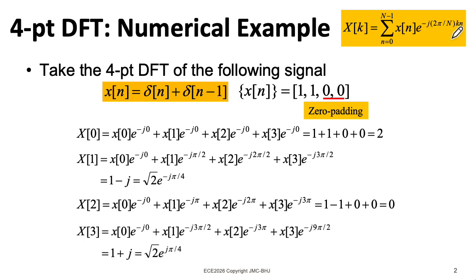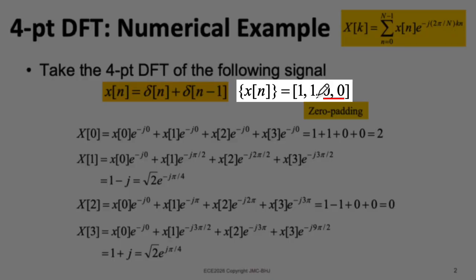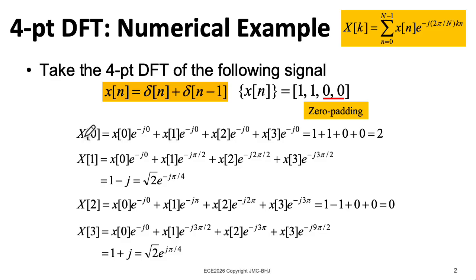You can work out big X three in a brute force way by plugging in three for k here and expanding the summation. But remember that x of n is real, and since x of n is real, we know there's going to be a conjugate symmetry here. So I have e to the minus j pi over four, and here I have e to the plus j pi over four. So I wind up with this sequence as my discrete Fourier transform.